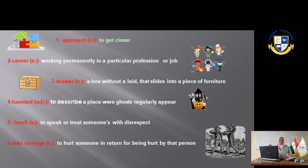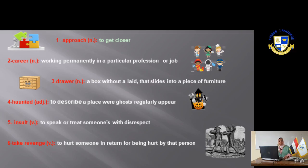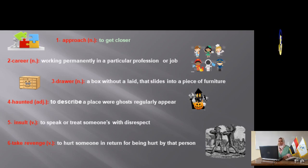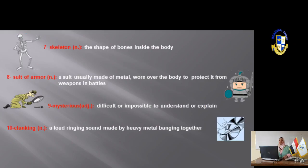The word 'drawer' — it's a box without sides that slides into a piece of furniture; maybe there's a mirror over it or you can put a vase on top. The word 'haunted' means a place where ghosts regularly appear or live. The word 'insult' means to speak or treat someone with disrespect or in a rude way. 'Take revenge' means to hurt someone in return for being hurt by that person — to return the bad treatment. Slide number three: 'skeleton' is the shape of the bones inside our body, as shown in the picture.